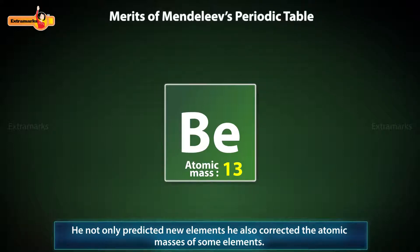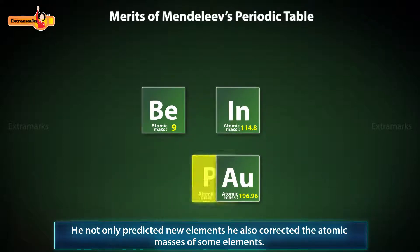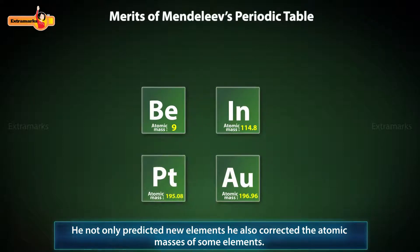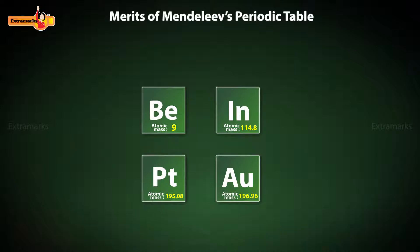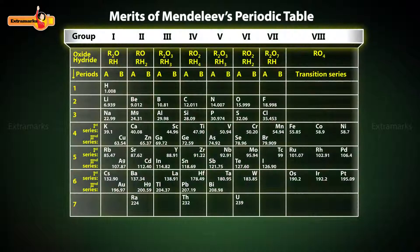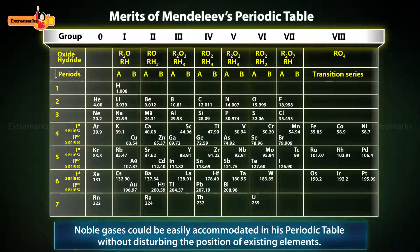For example, he corrected the atomic mass of beryllium from 13 to 9. He also corrected the atomic masses of indium, gold, platinum, etc. Mendeleev's vision was so clear that when noble gases were discovered, they could be easily accommodated in his periodic table without disturbing the position of existing elements.